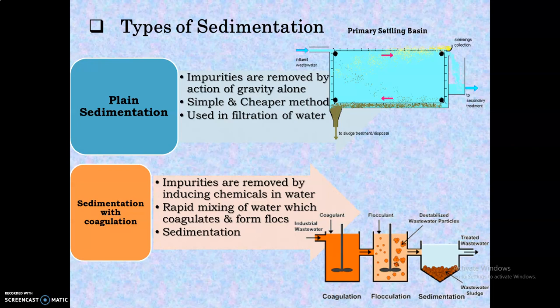The second type is sedimentation with coagulation, where impurities are removed by introducing chemicals into the water, forming flocs. With rapid mixing of water, coagulation occurs and flocs are formed, and those flocs are removed by the process of sedimentation. We will be studying both types in detail.